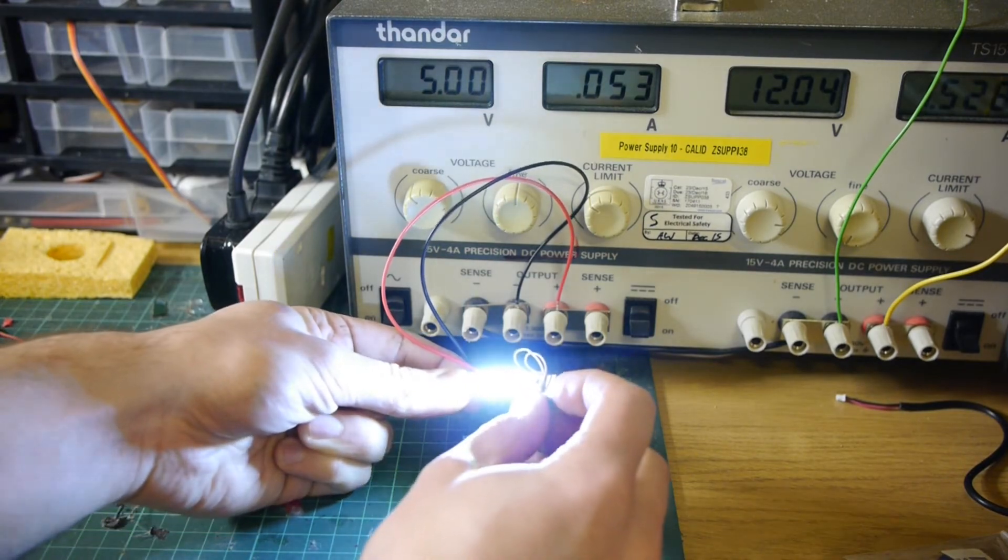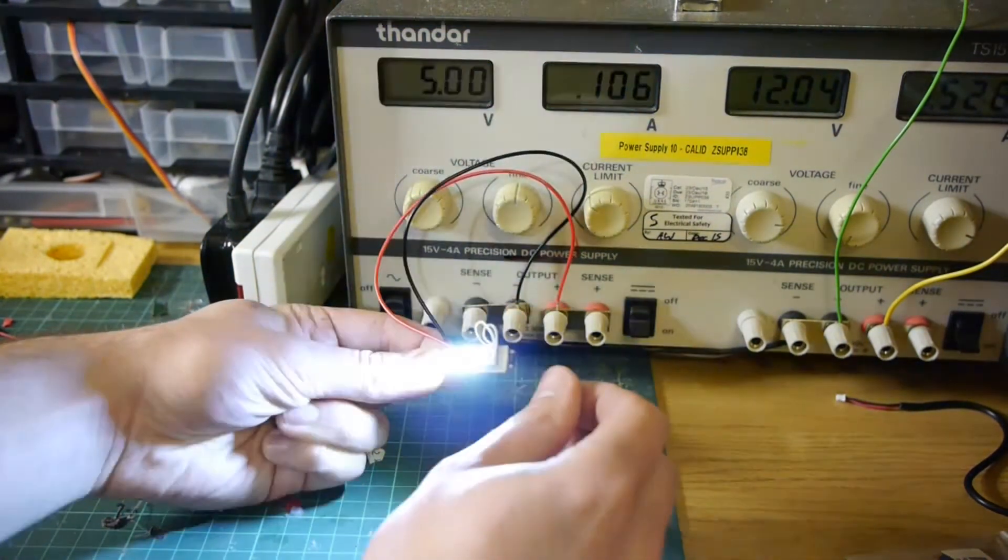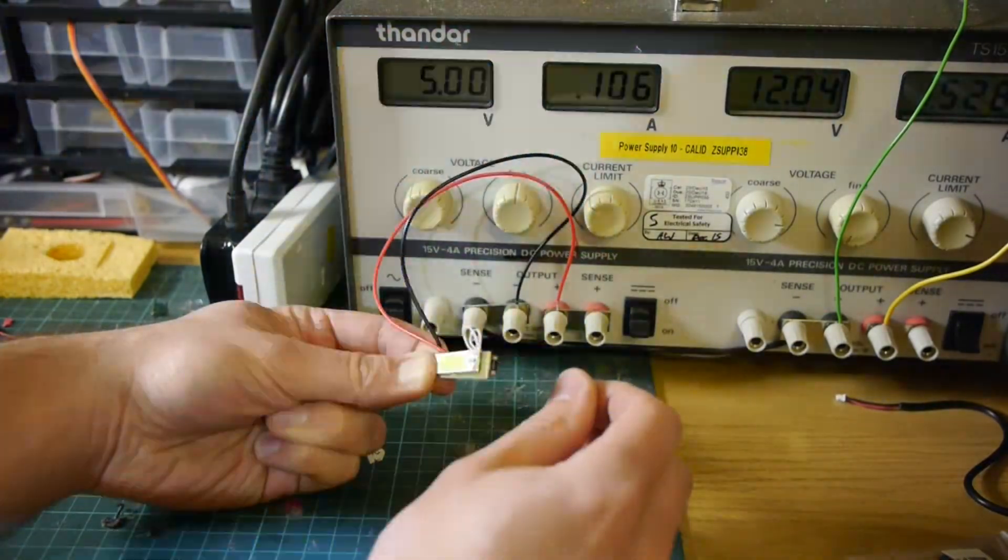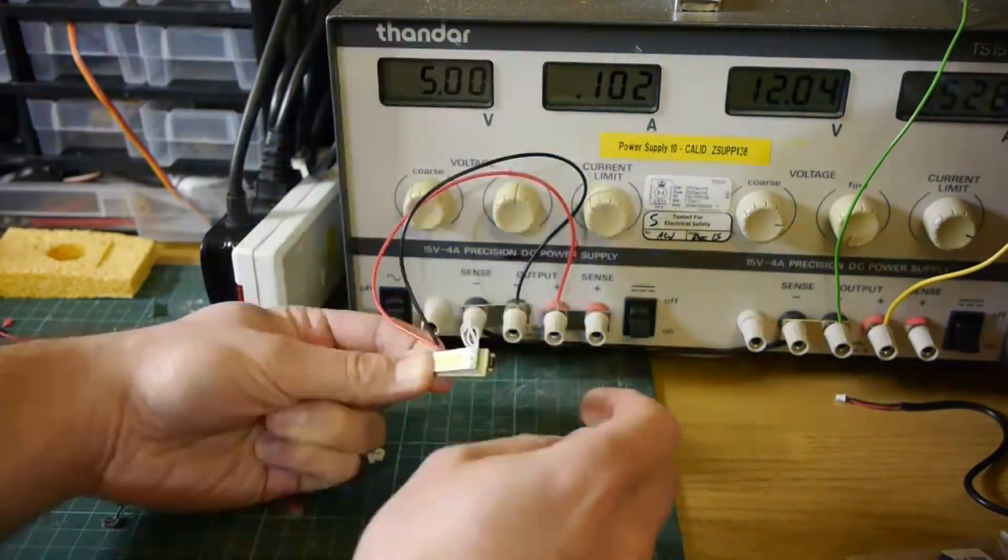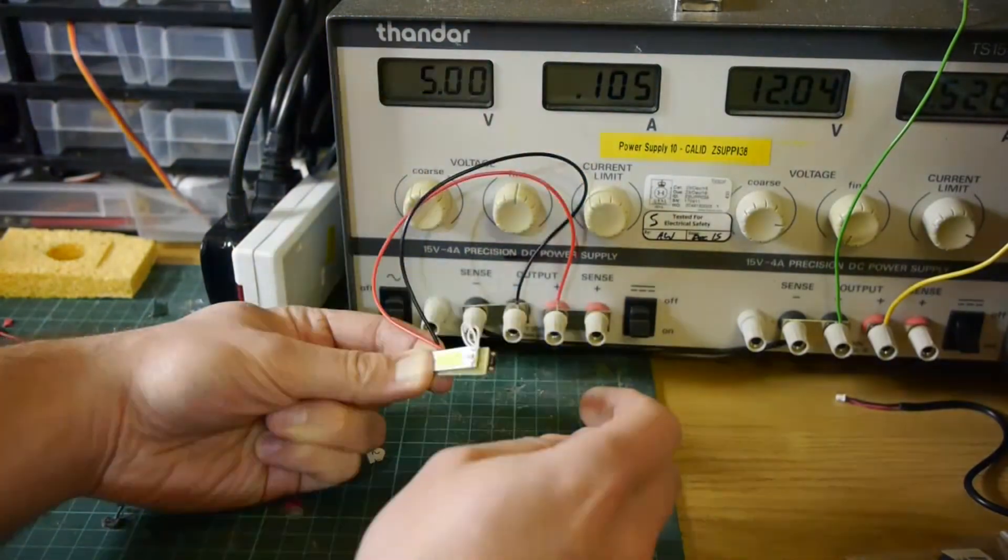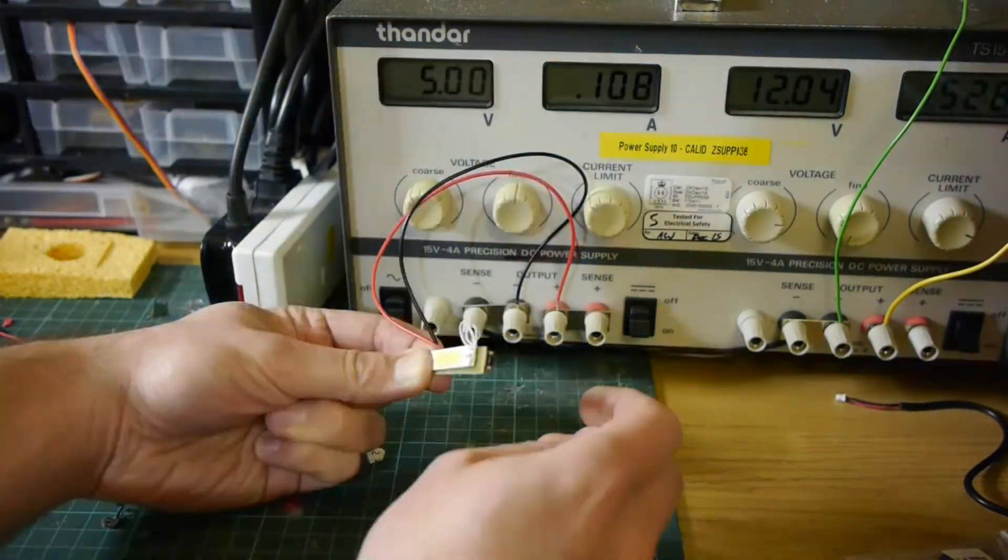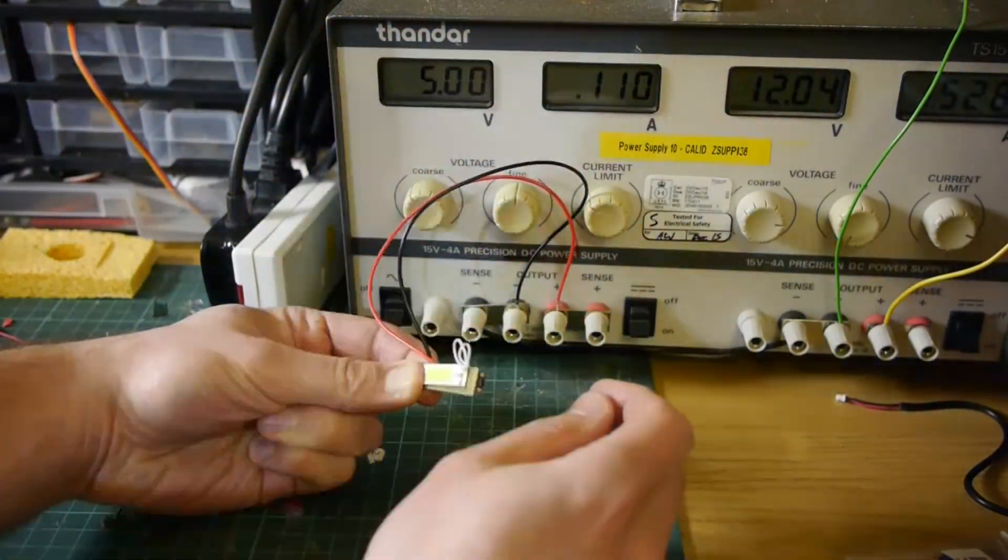Now the one I'm most interested in is the flashing I think flashing gives you a much better visibility as you can see drawing between sort of 100 to 115 milliamps on the flashing setting so I think that's okay I'm okay with that.